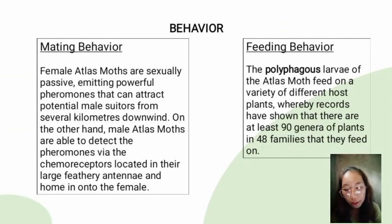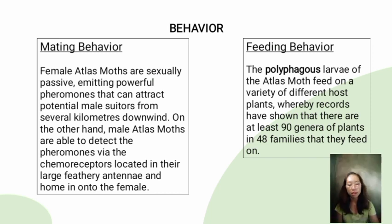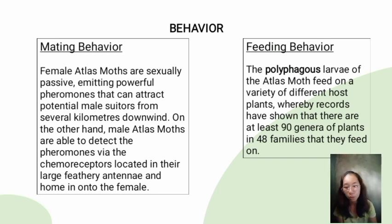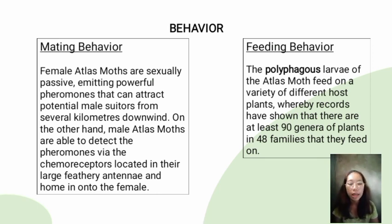Regarding mating behavior: female atlas moths are sexually passive, emitting powerful pheromones that can attract potential male suitors from several kilometers downwind. Male atlas moths are able to detect these pheromones via chemoreceptors located in their large feathery antennae, and home in on the female.